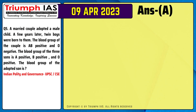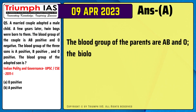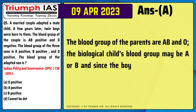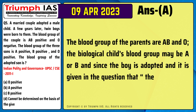The correct answer is option A. The blood group of the parents are AB and O. The biological children's blood groups may be A or B, and since the boy is adopted, and it is given in the question that the blood group of the three sons are A+, B+, and O+, the adopted son's blood group is O positive.